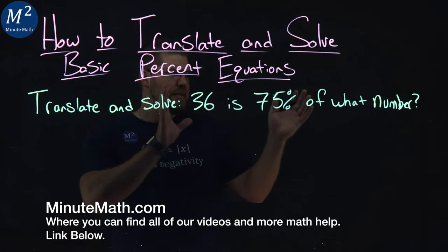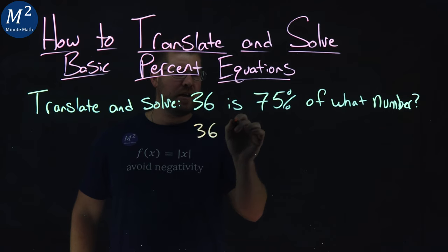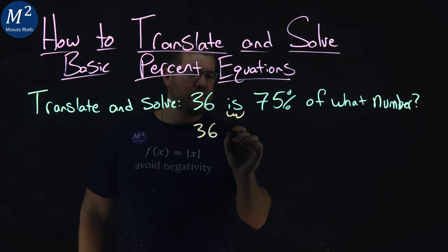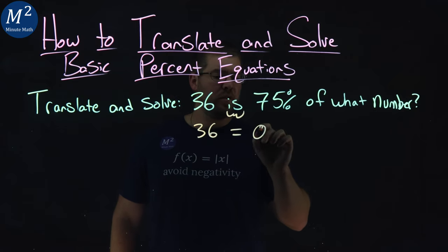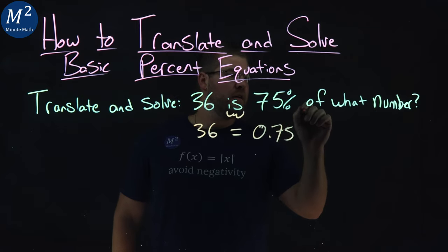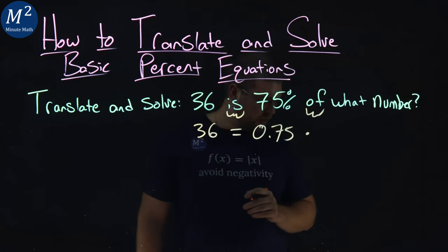Let's see if we can take this statement and turn it into a mathematical equation. 36 is pretty easy, kind of comes down. Is, it was an equal sign, 75% becomes a 0.75 of multiplication, 0.75 of,